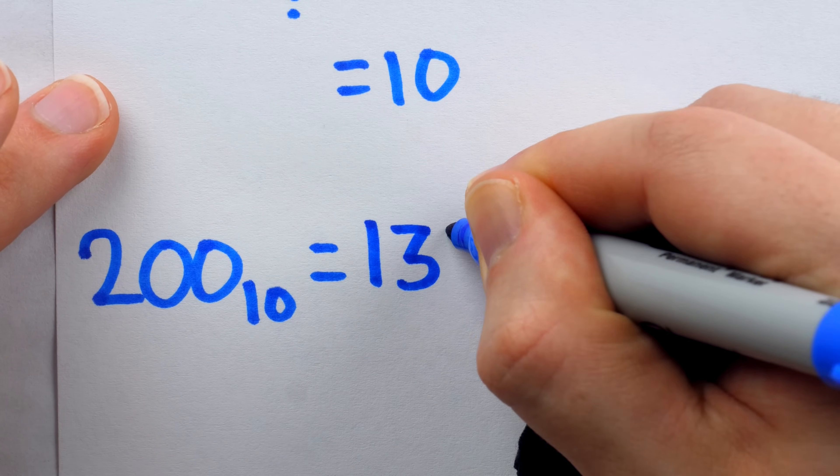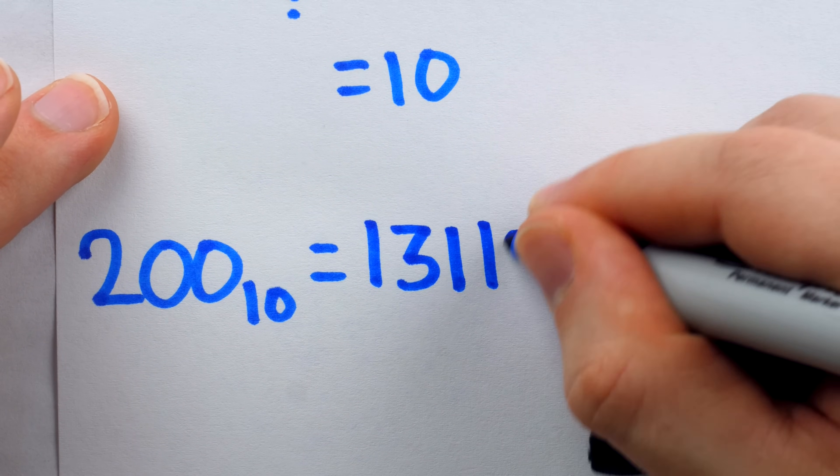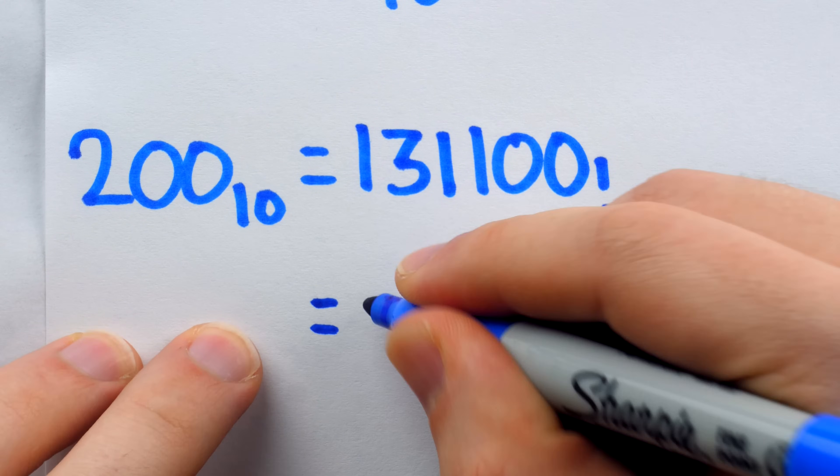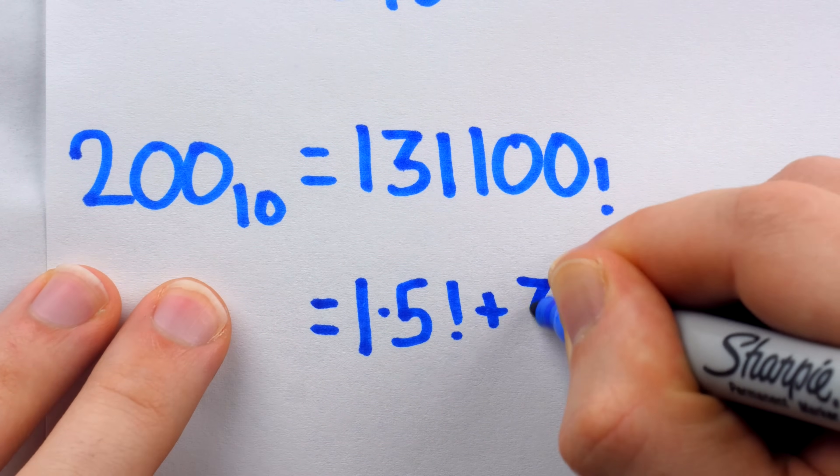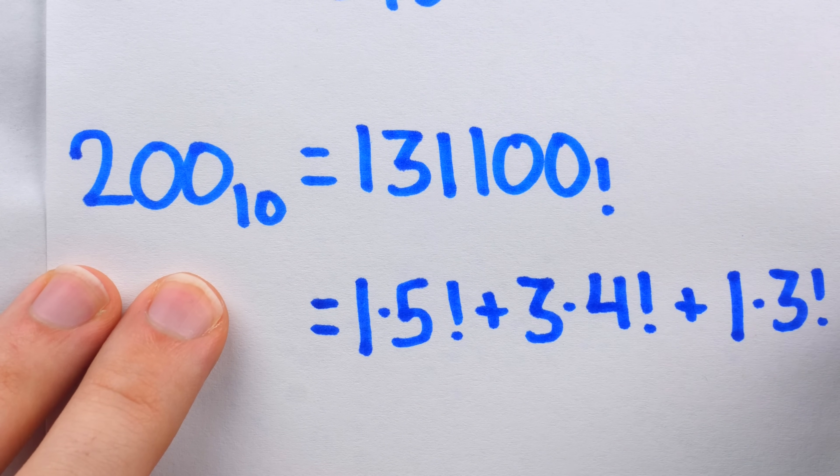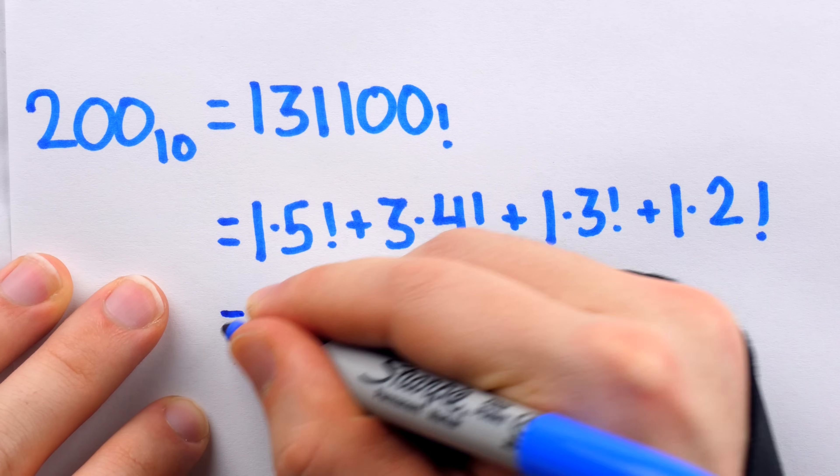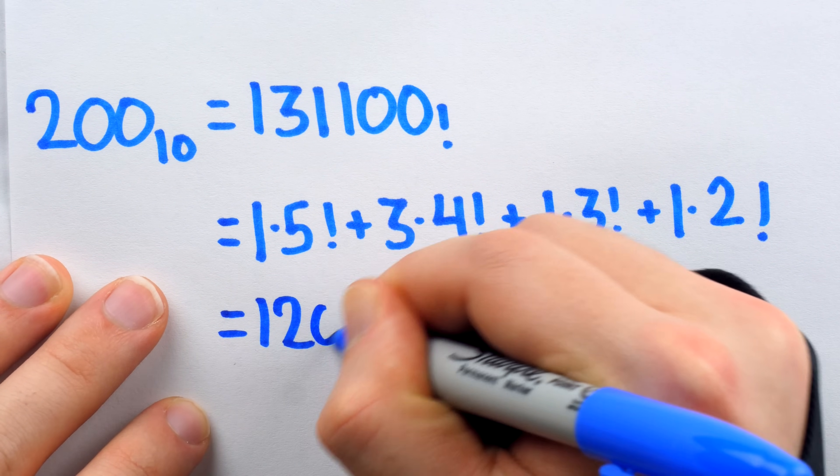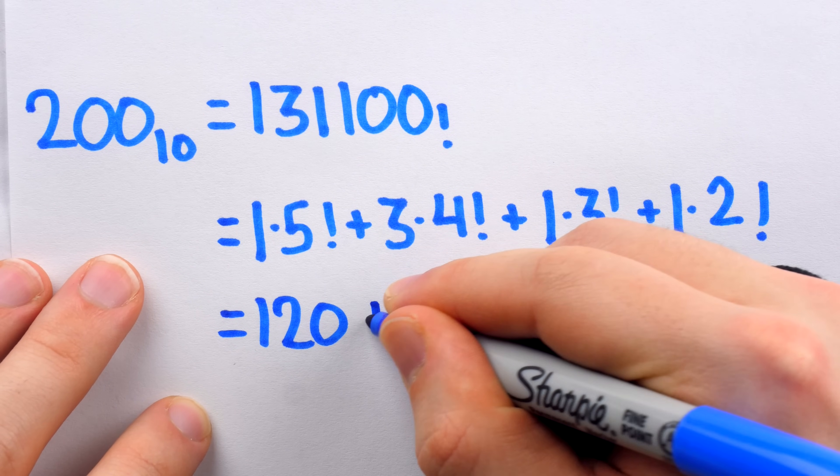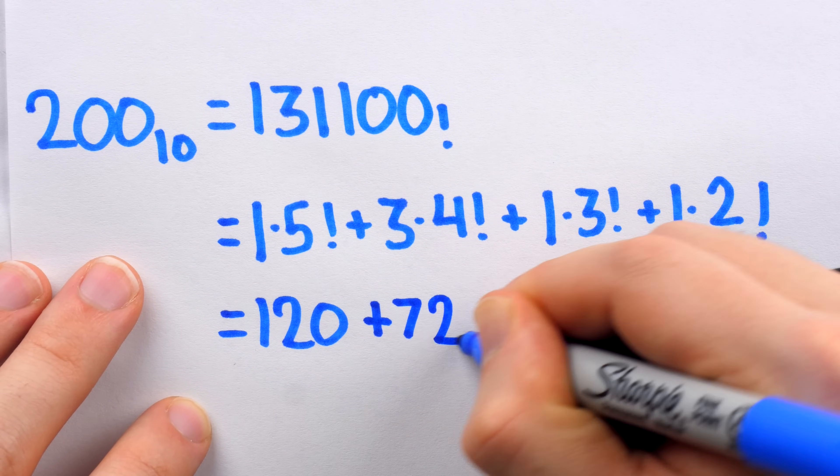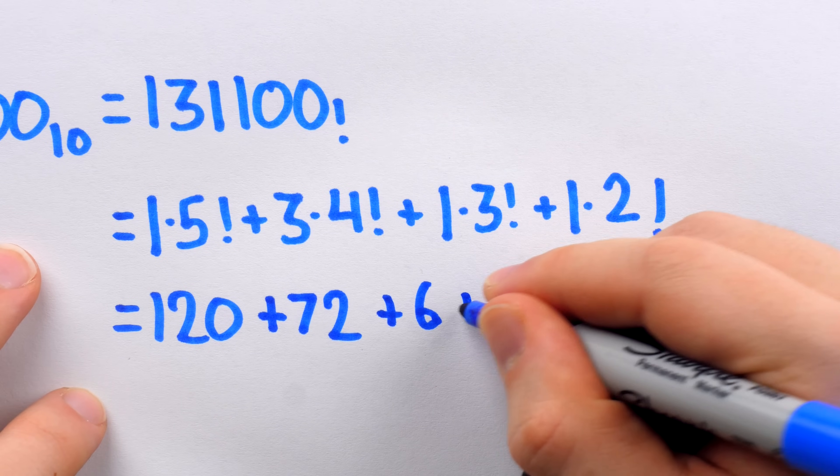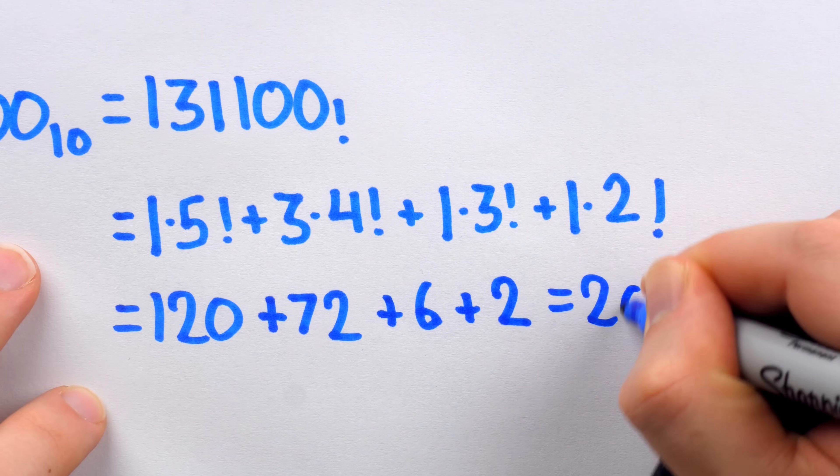it is 1, 3, 1, 1, 0, 0. That's 1 copy of 5 factorial plus 3 copies of 4 factorial plus 1 copy of 3 factorial plus 1 copy of 2 factorial plus 0 copies of everything else. So this is 1 copy of 120 plus 3 copies of 24, which is 72, plus 6, and then plus 2, which totals up to 200.